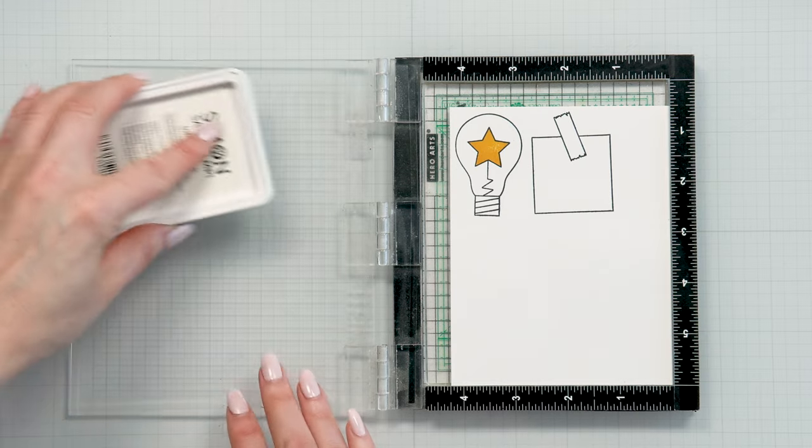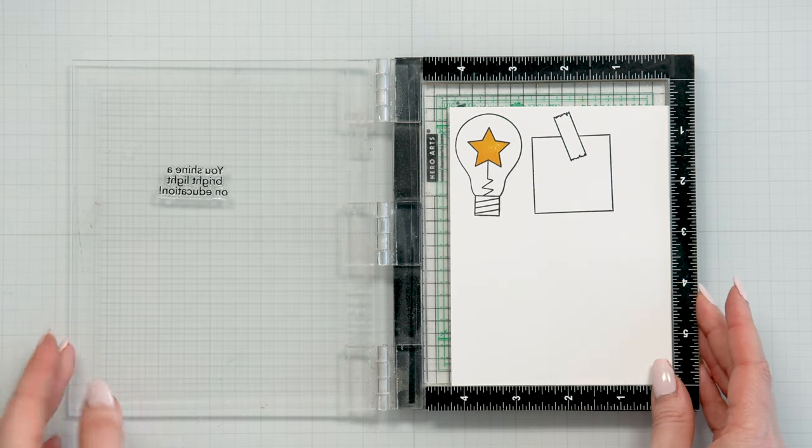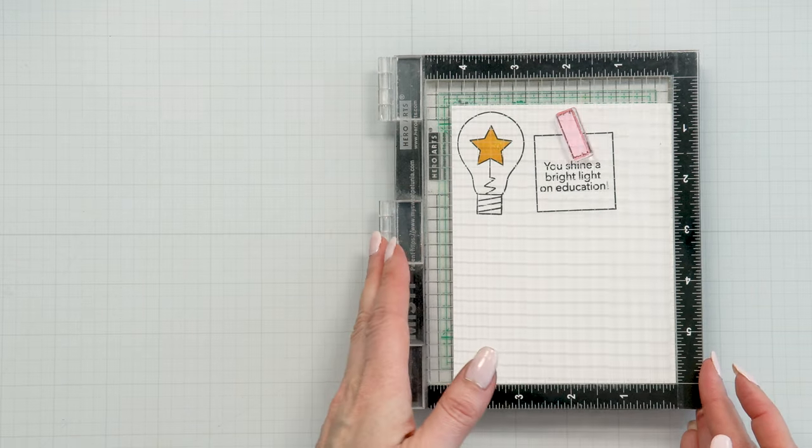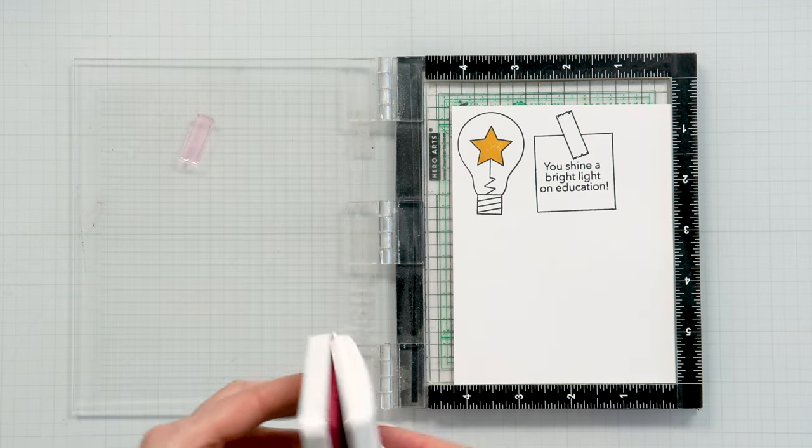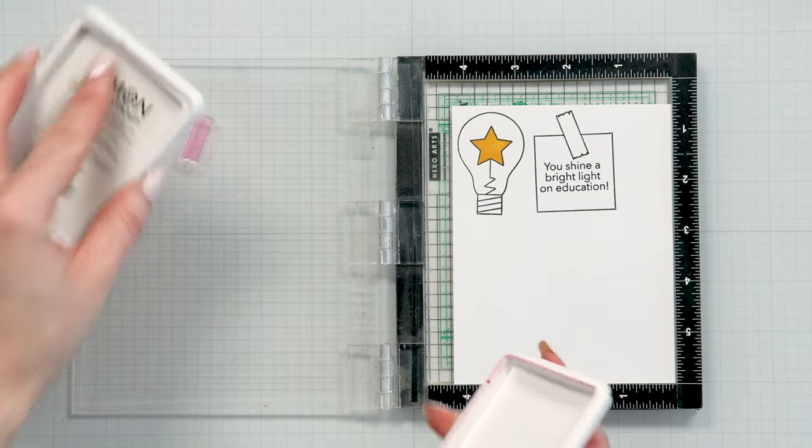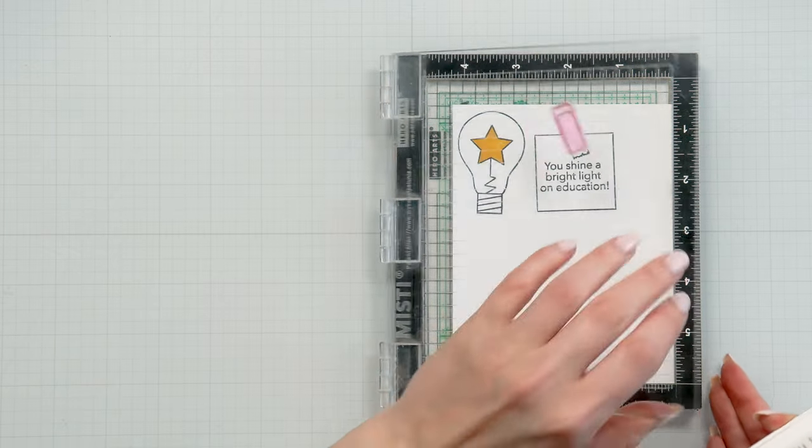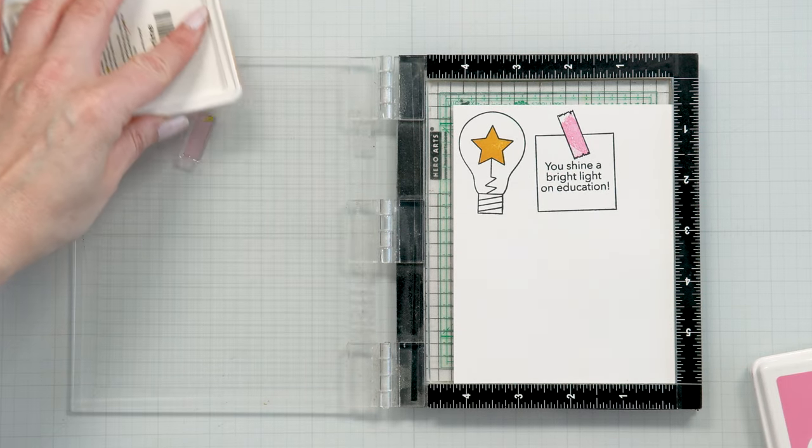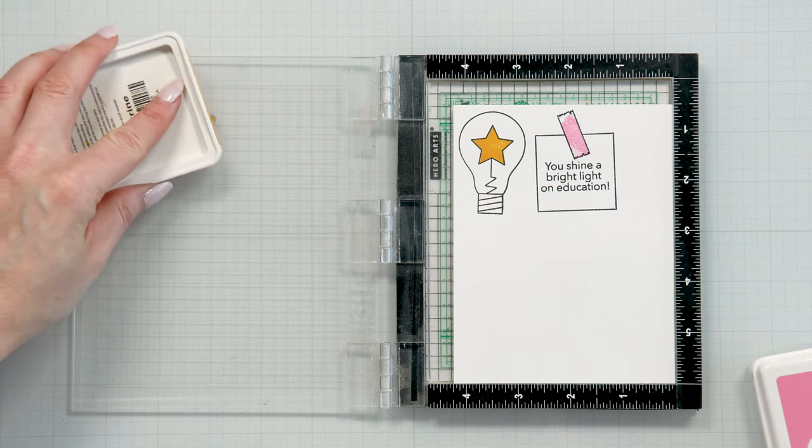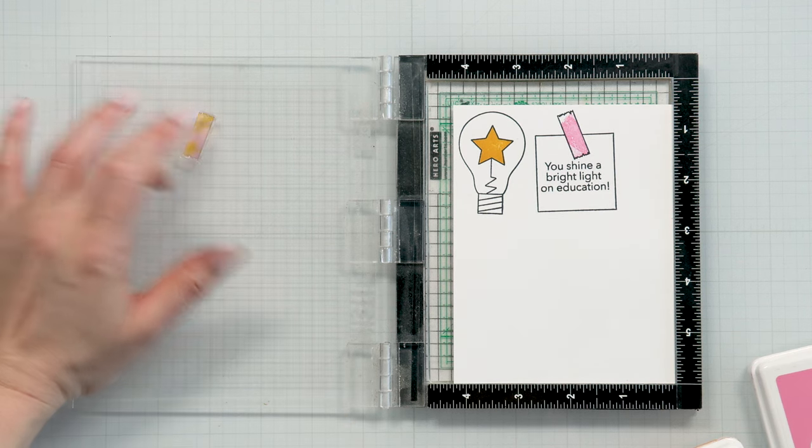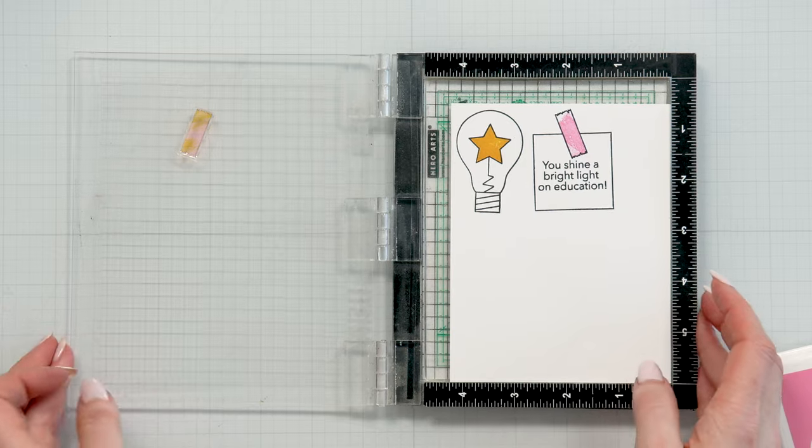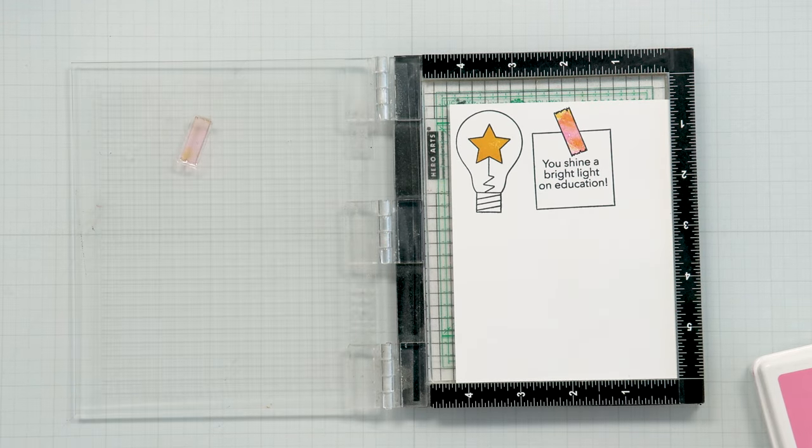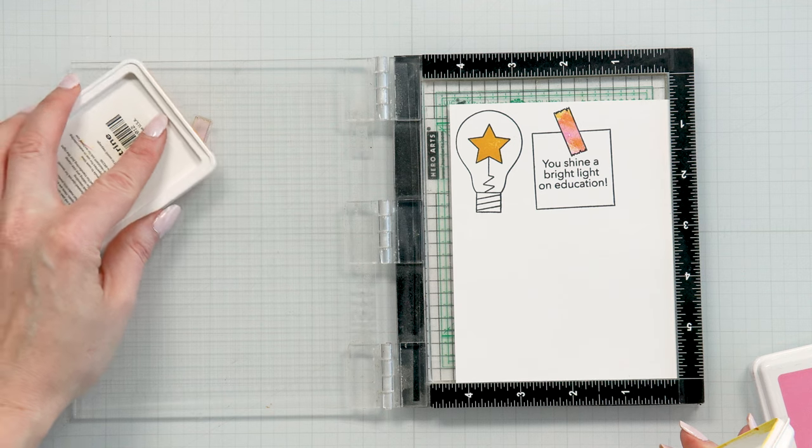...she had stomach cancer surgery five years ago. She switched, she needed to cut back on her hours and she now just teaches Ukrainian language to elementary school kids. So her workload has lightened significantly, but she still is a teacher and she is still in school every day. So when I saw the stamp set, I really thought about my mom and also about all of the other teachers out there who really do shine a bright light on education.